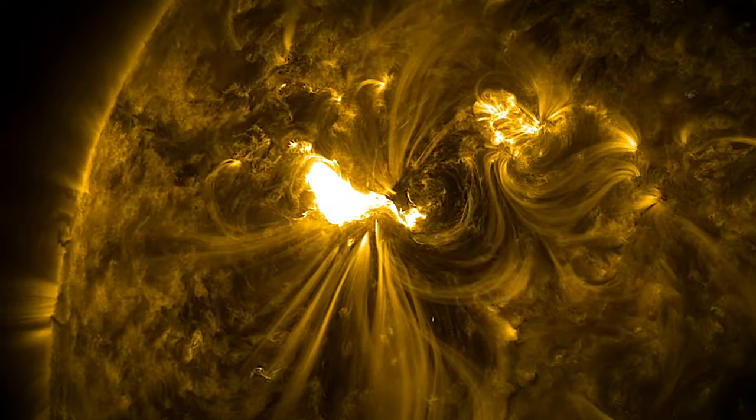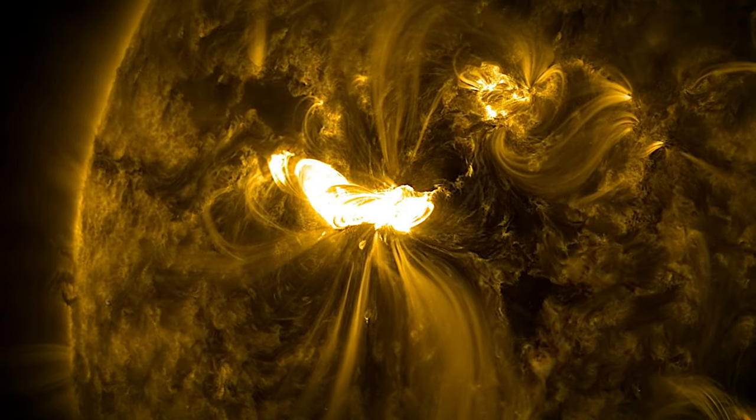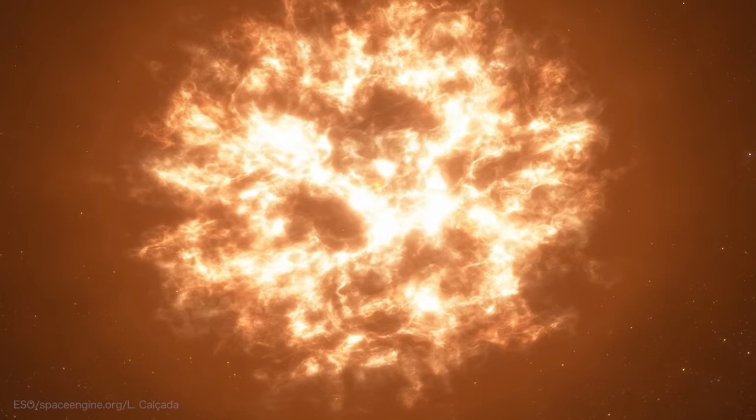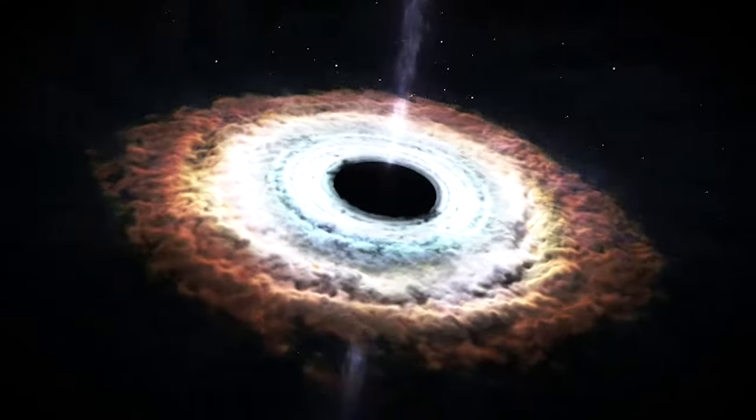Magnetic reconnection triggers solar flares on the surface of the Sun, creates shock waves near supernovae, and violently twists plasma around black holes.